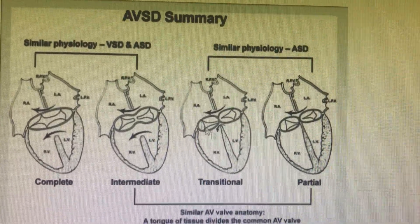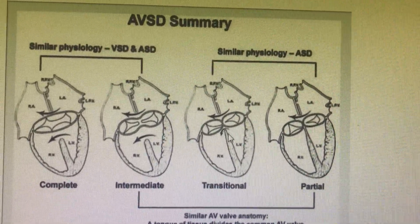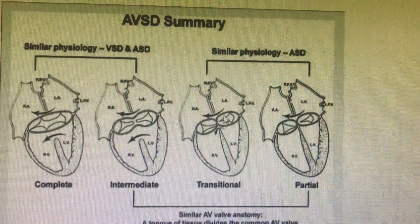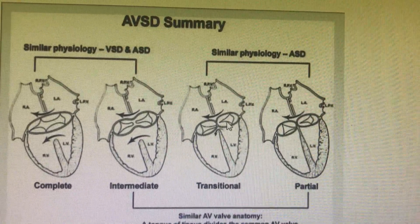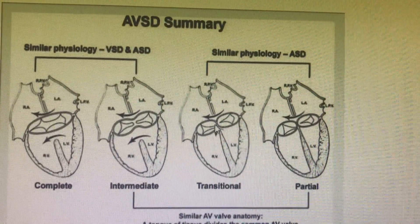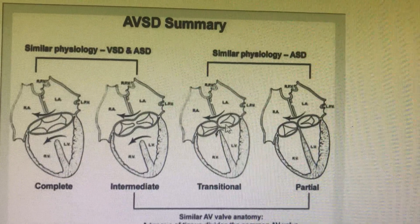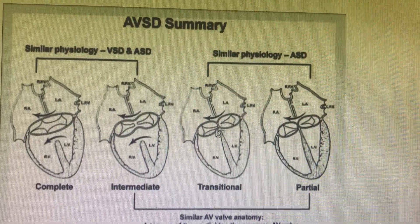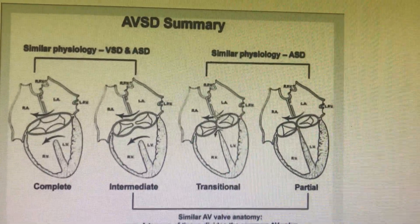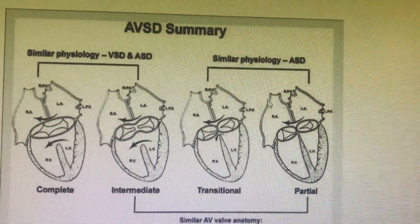There is something called transitional ASD. There is an inlet ASD and a primum ASD, but the two valves — mitral and tricuspid — are separate, yet both valves are at the same level, making it a transitional type of AV septal defect.